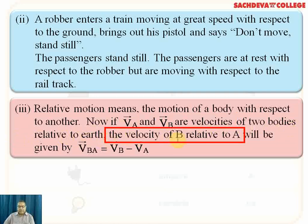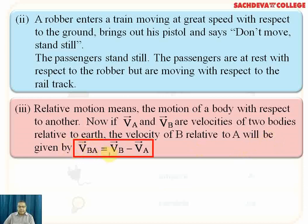The velocity of B relative to A is given by v_BA = vB minus vA. We take the difference because va and vb are velocities with respect to earth and they are moving in the same direction. Similarly, v_AB would be va minus vb. If the two bodies are moving along the same line in the same direction with velocities va and vb relative to earth, the velocity of B relative to A is v_BA = vB minus vA.